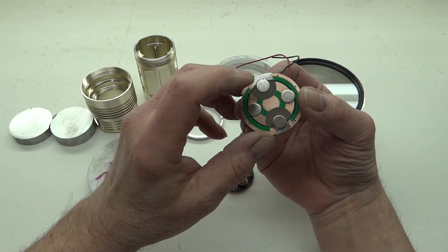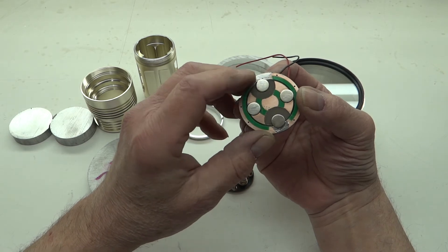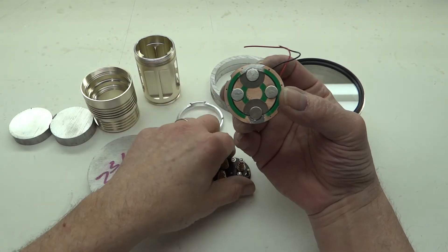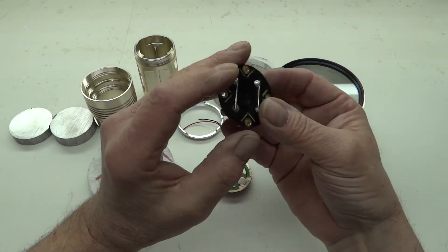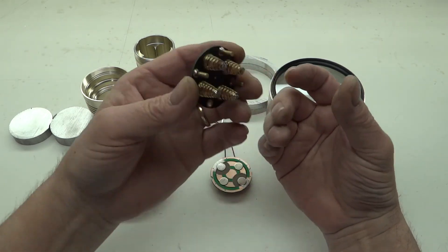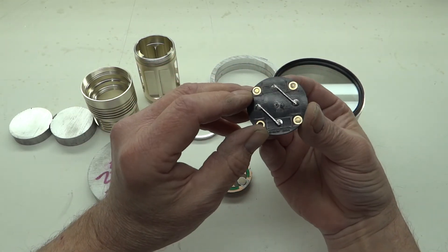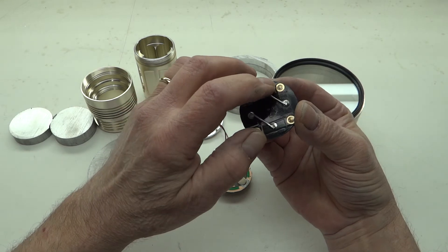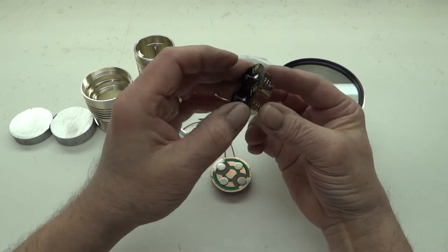So that's some modification again. I just use an exacto knife to get that copper trace out of the way. Then I had to do the back end for the springs.